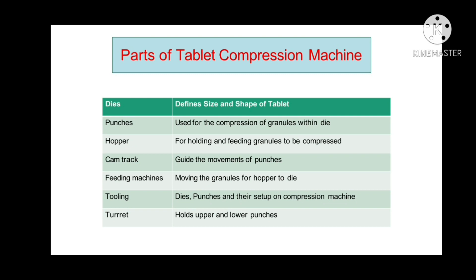First, dies define the size and shape of the tablet. Next, punches — the types of punches are: round shape punch die set, oval shape punch die set, capsule shape punch die set, geometric shape punch die set, and irregular shape punch die set. The function of punches is compression of granules within the die.